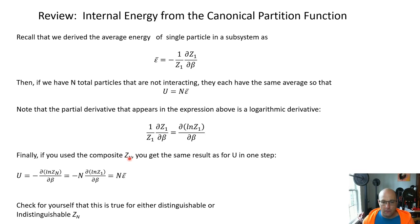And so finally, to note that if we actually use the composite Z in this formula, we'll actually get the same result for this U in one step. And so we could say that U is equal to the partial of the composite Z with respect to beta. And that ends up just pulling an N down essentially from the logarithm so that you just get N times e bar. I've left out a bunch of intermediate steps here. And I think it would be good for you to check for yourself that this string of relationships is true.